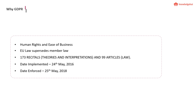EU law supersedes member law. Through the GDPR, it was not necessary for individual member states to set up their own regulations, because the GDPR automatically applied to all 28 countries. This document is huge — it has 173 recitals and 99 articles. The recitals refer to the interpretation of the law, how it is to be understood, and then the 99 articles are the actual law.